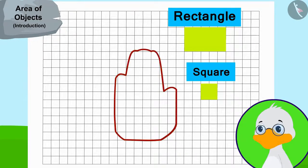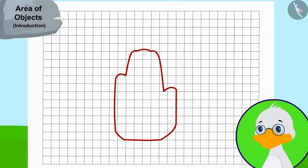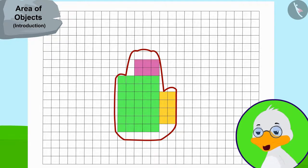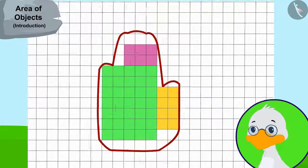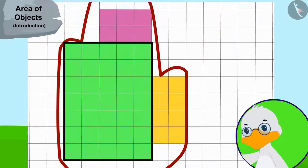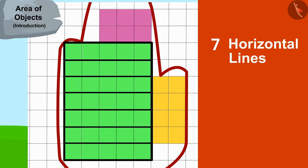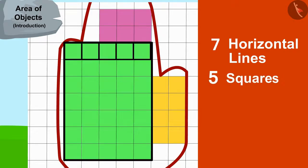Let me first draw as many rectangles and squares as I can in this shape. Saying this, uncle made three rectangles in this way in bunny's hand impression. Now I will first find the area of this rectangle. This rectangle has seven horizontal lines and each line has five squares in it.